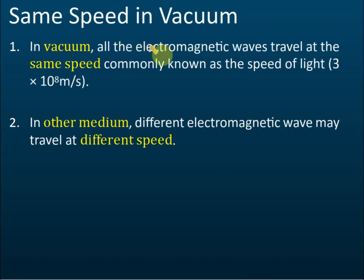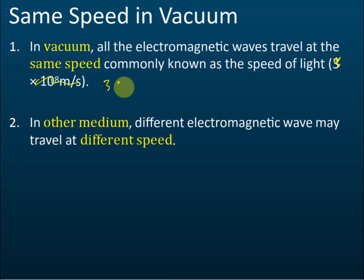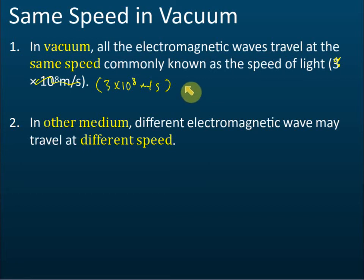All electromagnetic waves have the same speed in vacuum — that is the speed of light, 3×10⁸ meters per second. Since light is one of the electromagnetic waves, all electromagnetic waves have the same speed in vacuum.